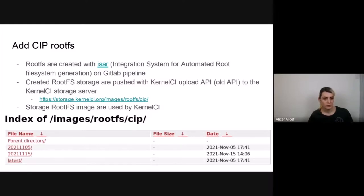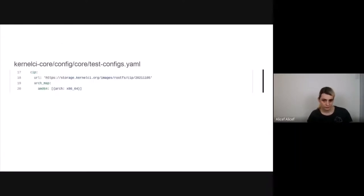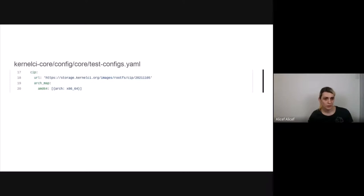In the lower part of this slide we can see an example of the KernelCI storage. These CIP rootfs images are used by KernelCI for some CIP testing. We can see how KernelCI is using the rootfs images that are in the KernelCI storage. This setting is done under the KernelCI core repository in the test configuration setting, where we have the rootfs configuration.